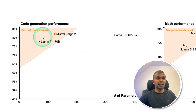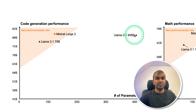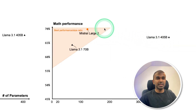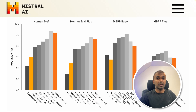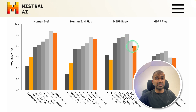When you see the code generation performance, Mistral Large 2 is on par with the Llama 3.1 405 billion parameter model. Similarly, when you take math performance, Mistral Large 2 is better than Llama 3.1. But for some other benchmarks it is much better than Llama 3.1, and for some it is slightly lower than Llama 3.1 and also GPT-4o.